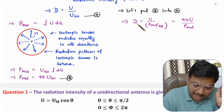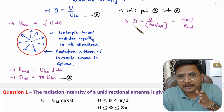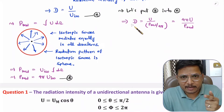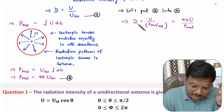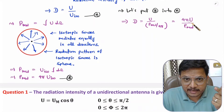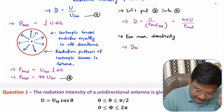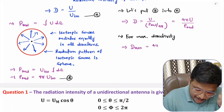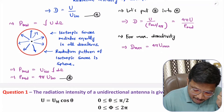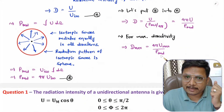Usually we calculate maximum directivity. With a directional antenna, you have maximum directivity in a certain direction, and less directivity in other directions. So for maximum directivity, the equation is: D_max = 4π × U_max / P_radiated.